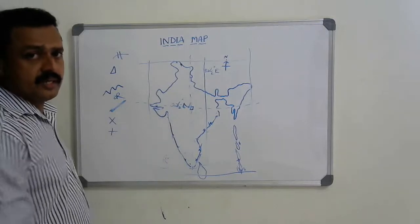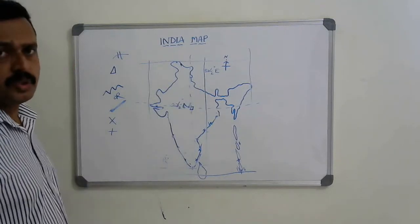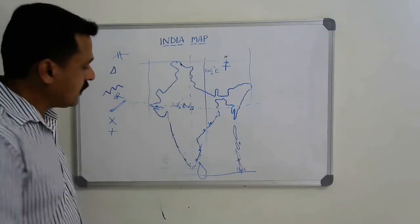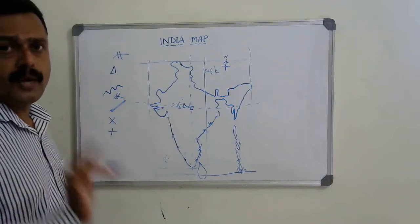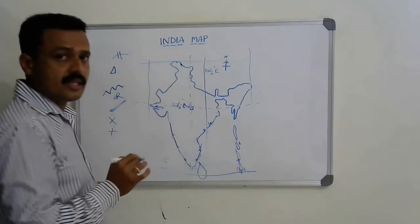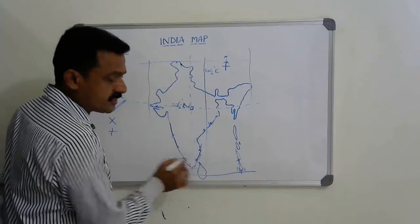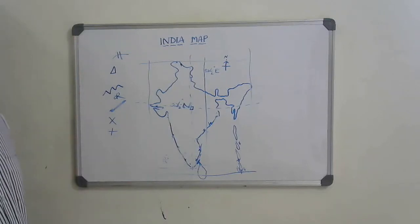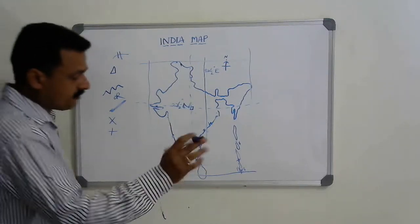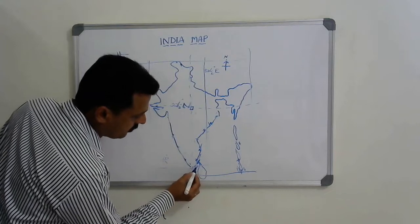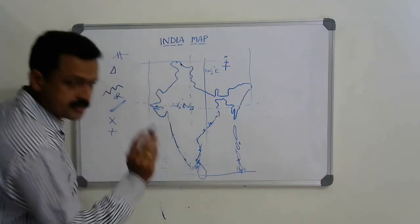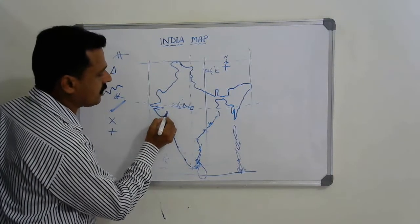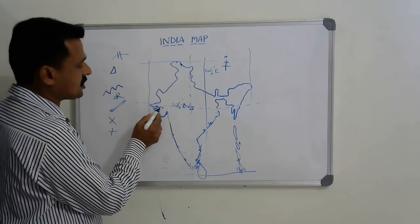Palk Strait — don't confuse it with Pakistan. Palk Strait is between India and Sri Lanka; shade this area and write Palk Strait. Gulf of Mannar is also here — shade this area. Gulf of Cambay comes here on the western coast. Rann of Kutch is located here.